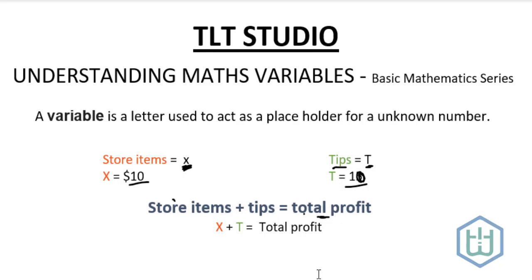Then this value here would change. So it would be 10 plus the value of T which is 10, which would equal 20. So that's in a nutshell what it's all about.